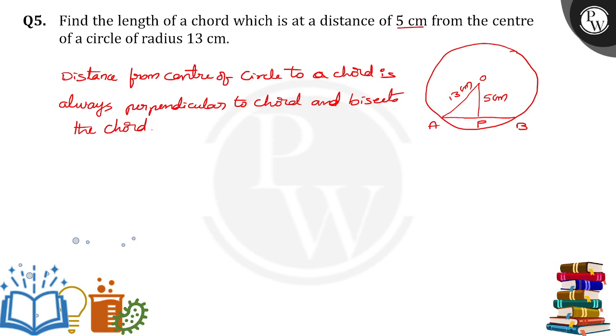Now what will happen here? P is the midpoint of AB. If we can find AP value, then we can find AB value as well.